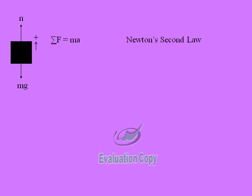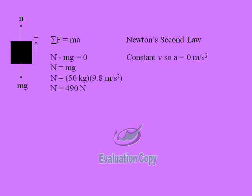For the equations, we begin with Newton's second law, which is the sum of the forces equals mass times acceleration. The sum of the forces is equal to the normal force minus mass times gravity. Because there is a constant velocity, the acceleration is equal to zero.